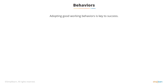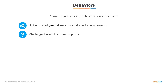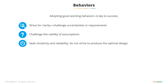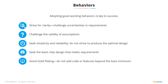Part of the process of improvement is changing the way people work. We need to strive for clarity and challenge any uncertainties in requirements. We don't want to fill in gaps — ask somebody who knows the answer before making any assumptions. Assumptions are particularly difficult to deal with; we need to be sure they are valid and justified. We want simplicity and reliability. The optimal design is almost impossible, but the best design is what we strive for. We also want to reduce risk — meet requirements with the least-risk path — and importantly, avoid gold plating. Don't put extra code in just for the sake of it or for some potential future change that may never happen.